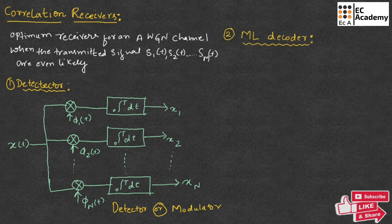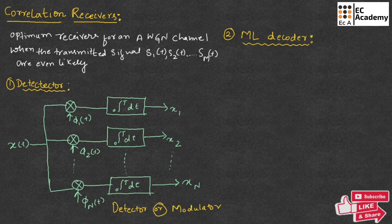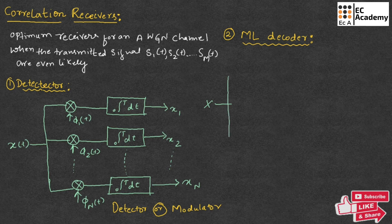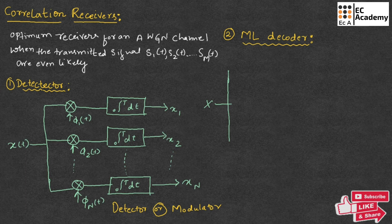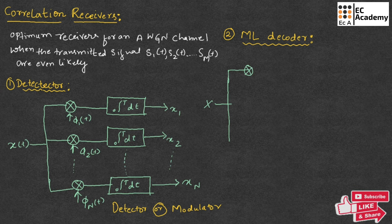Now let us understand the maximum likelihood decoder. In maximum likelihood decoder, observation vector X is considered. For this observation vector, M signal vectors are multiplied. So we will take the signal vectors, which is S1. S1, the second vector,